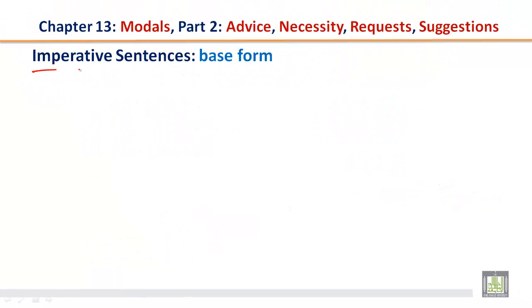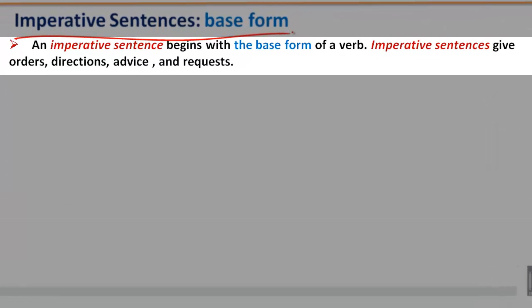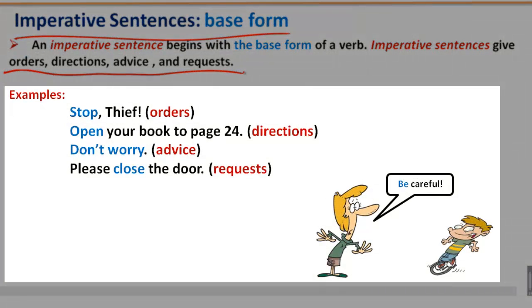Imperative sentences: Base form. An imperative sentence begins with the base form of a verb. Imperative sentences give orders, directions, advice, and requests. Stop. Thief. These are orders. And stop is the base form of the verb, which begins in all imperative sentences.